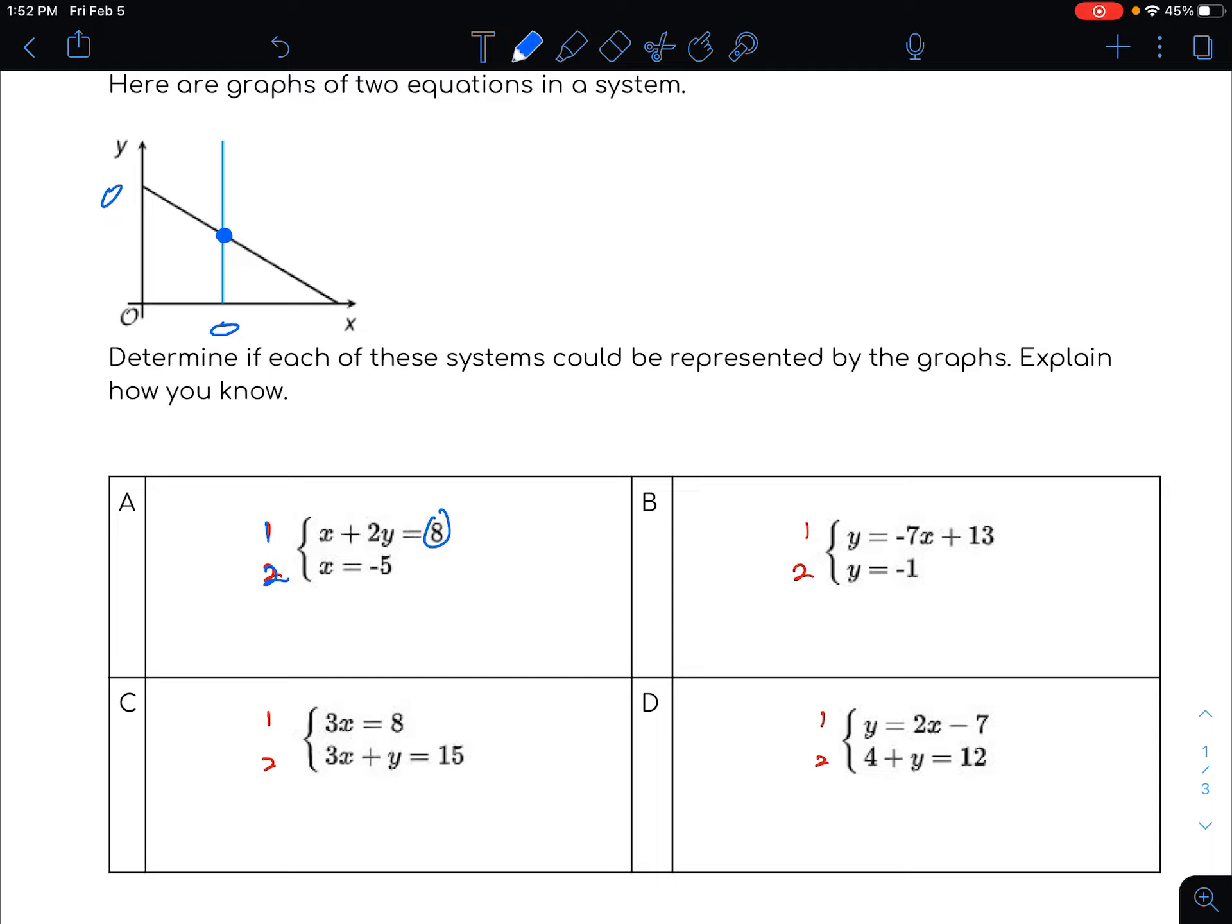So how else can we figure that out? Well, maybe you could pause here and think about how you would figure it out, like which one of these systems down below, A, B, C, or D, could be represented with these two lines.